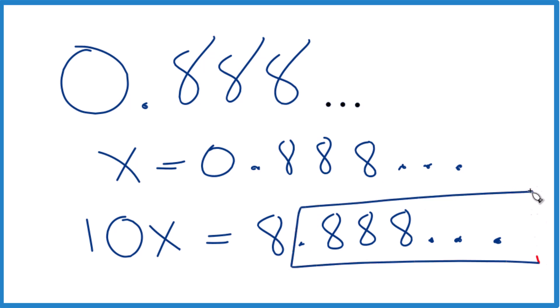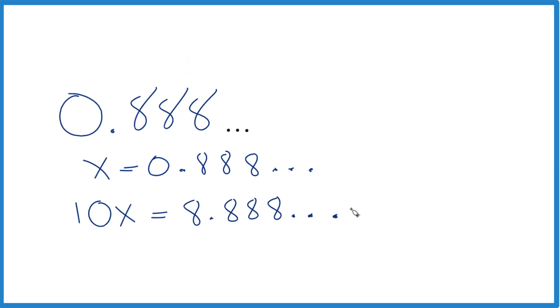We could subtract this off here and have 8. That would be really helpful. It'd be pretty easy to change this to a fraction. All we have to do is subtract 0.888 repeating. And then again, we have to do it on this side. But here's the trick.